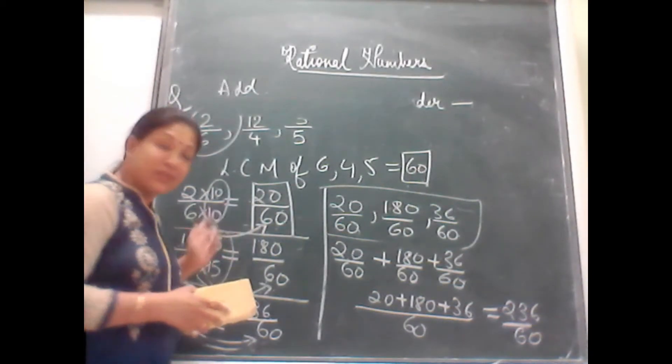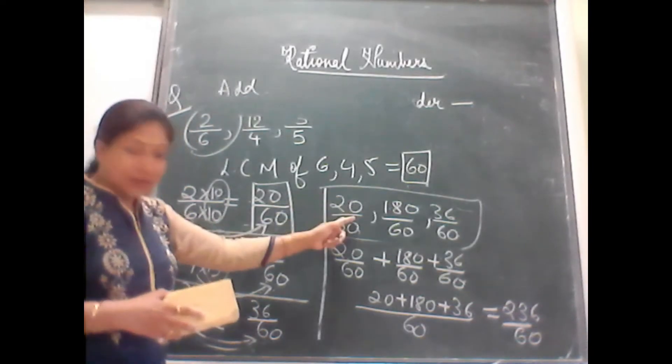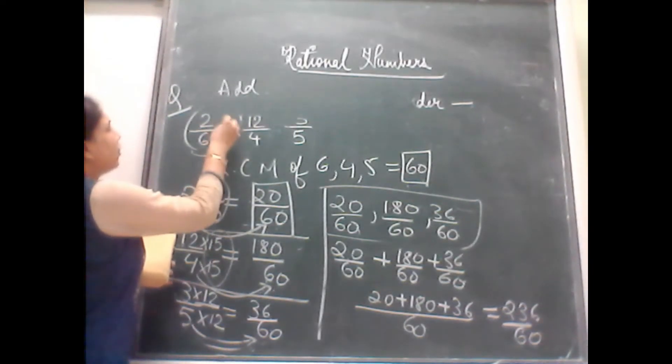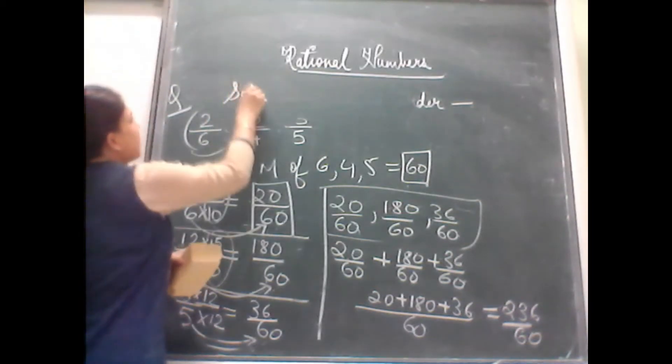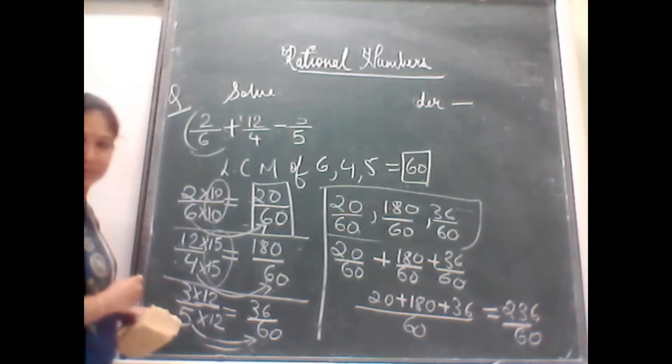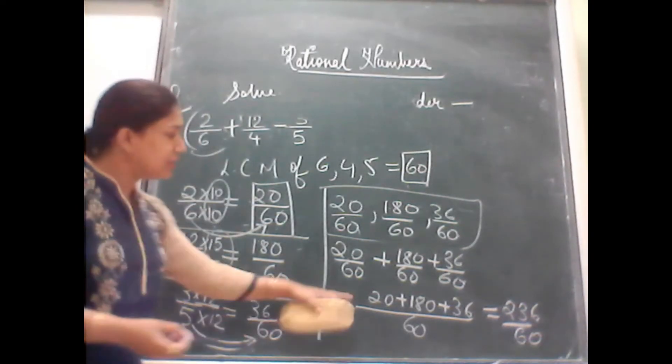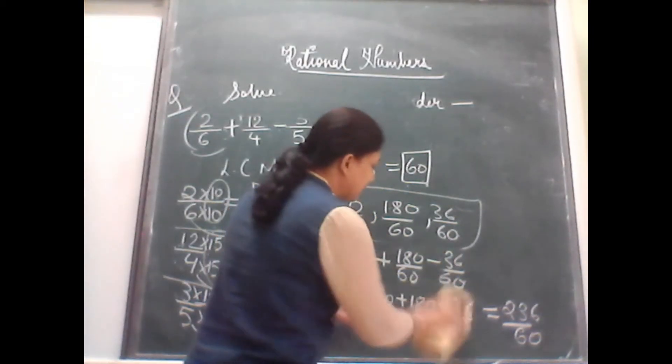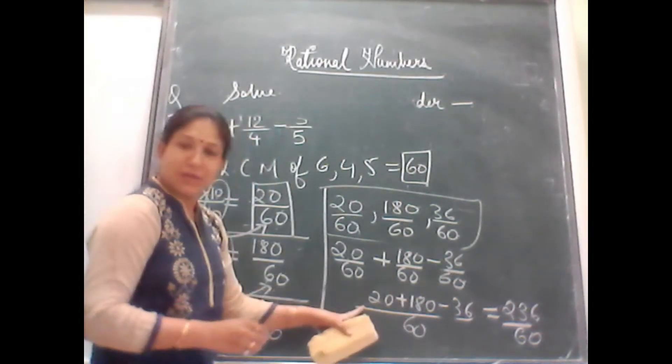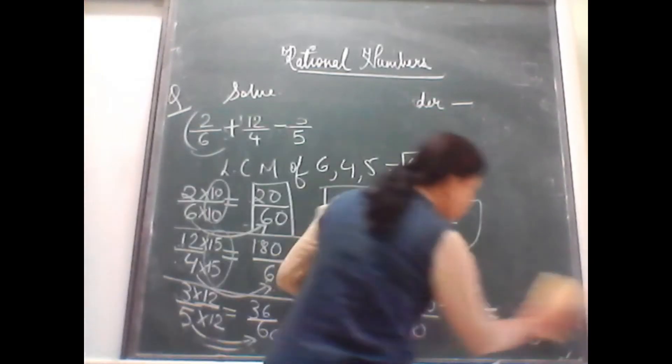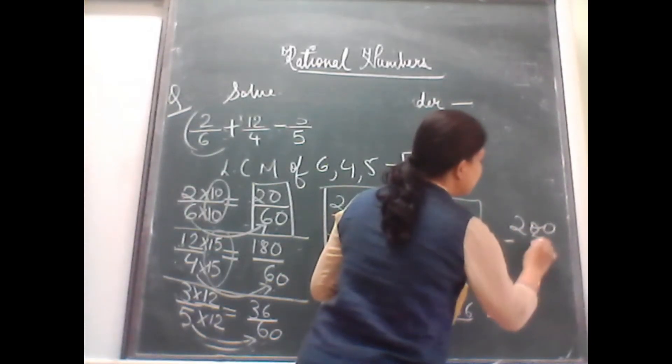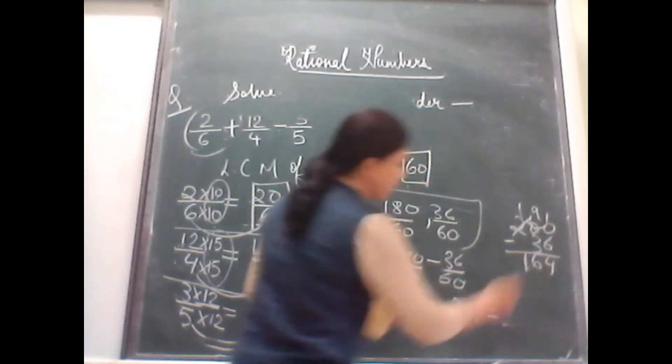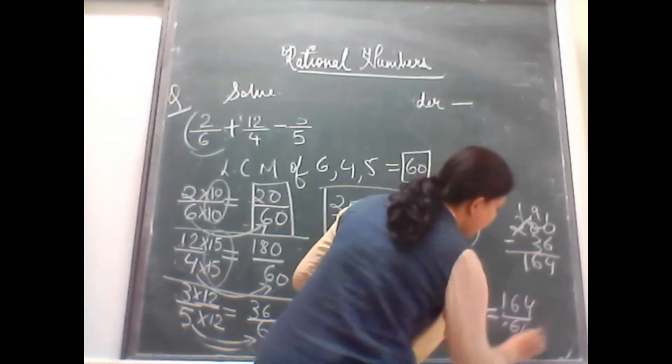Rewrite the answer after converting it into equivalent fraction again. And whatever is given. Take for example, here the question was. Suppose, solve and it was plus and minus. What are you going to do? Same thing. Till here, the method is same. Only here you write down minus. Then you write down here also minus. So, 180 plus 20 is 200. And 200 minus 36. You get it as 164. So, the answer is 164 upon 60.